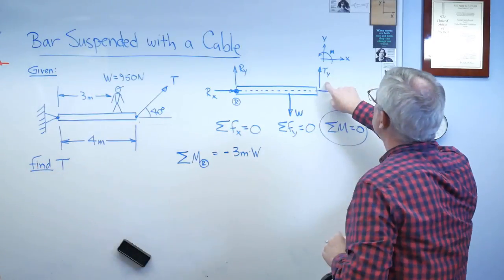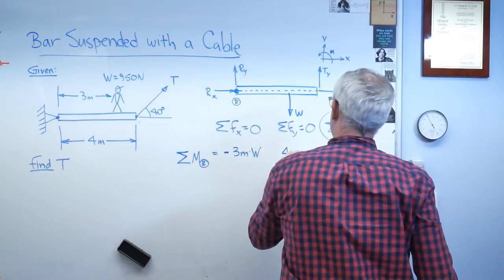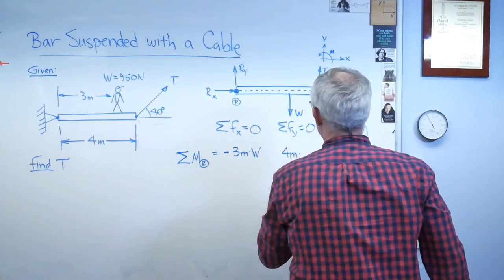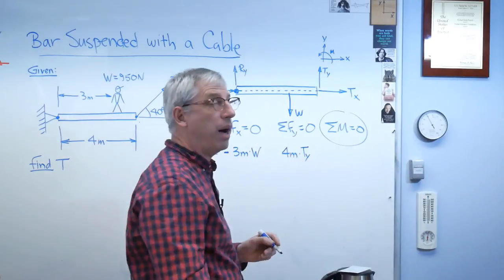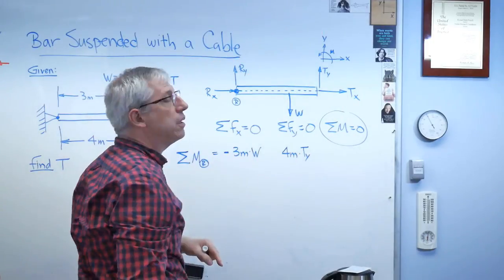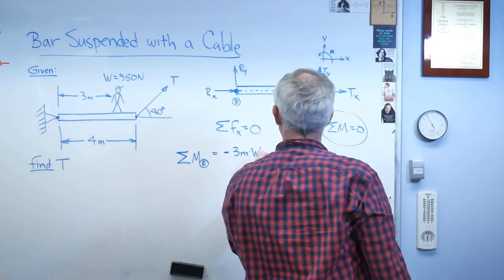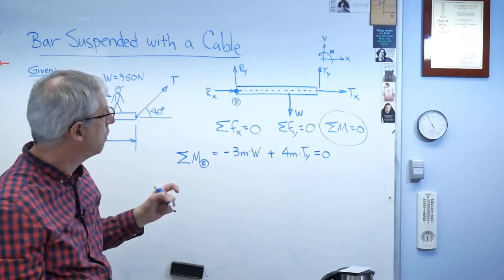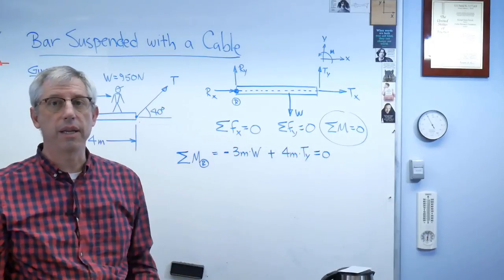Now, let's see. The next one is TY acting at a distance of 4 meters. Now, is that positive or negative? Well, if I put my finger there, this TY is trying to rotate the beam counterclockwise. Well, that's positive. And that has to equal zero. So what I got is one equation, and there's the only thing I don't know. One equation, one unknown. It doesn't get easier than that.